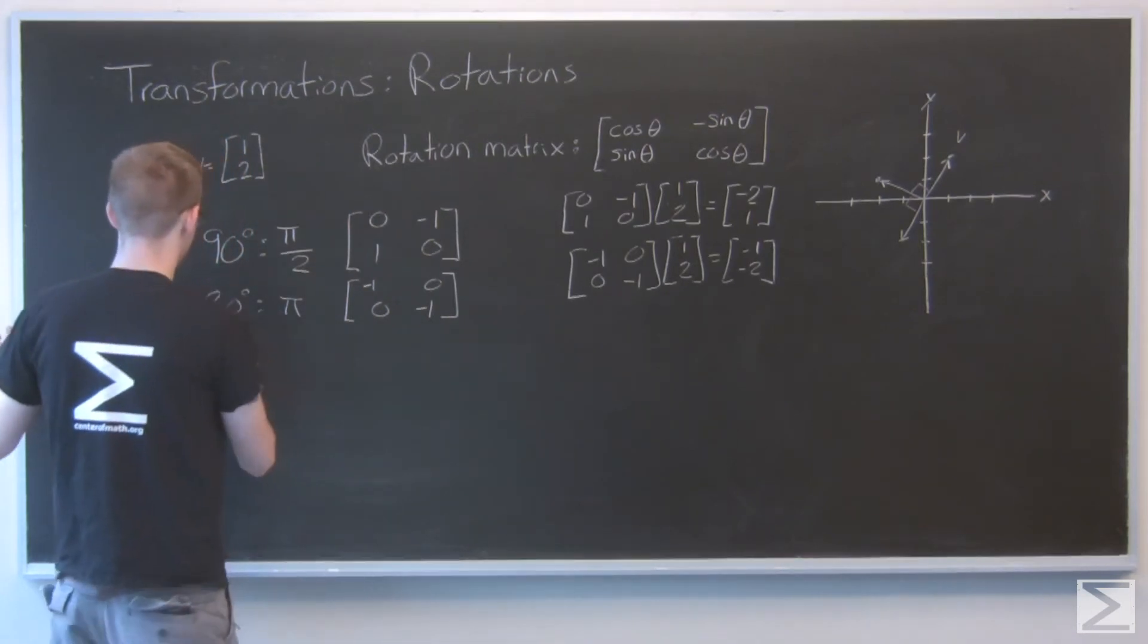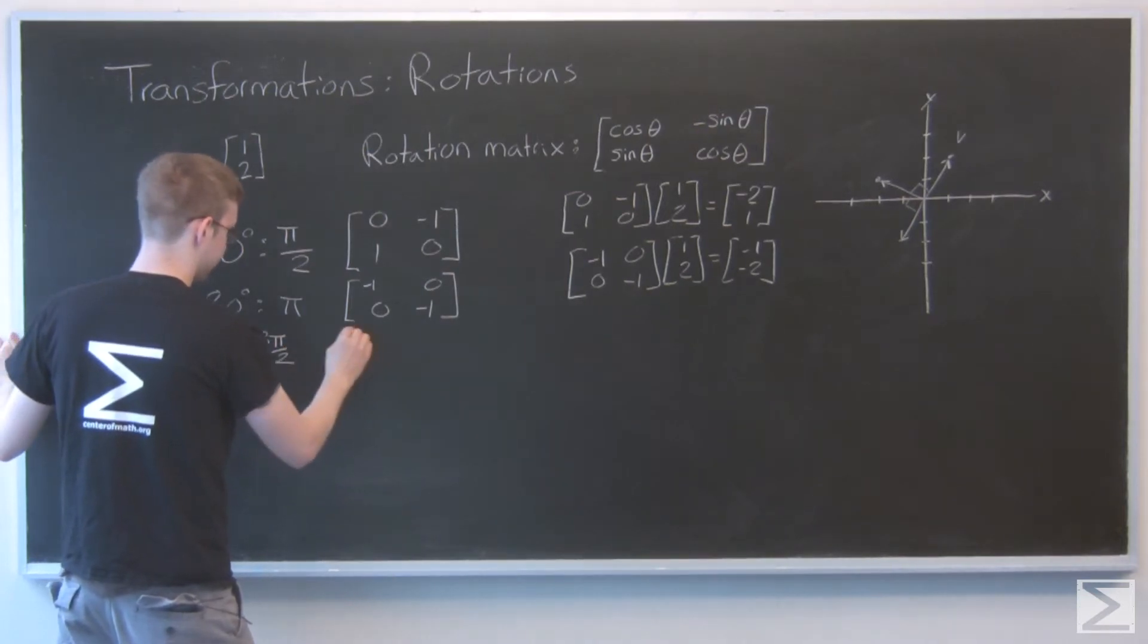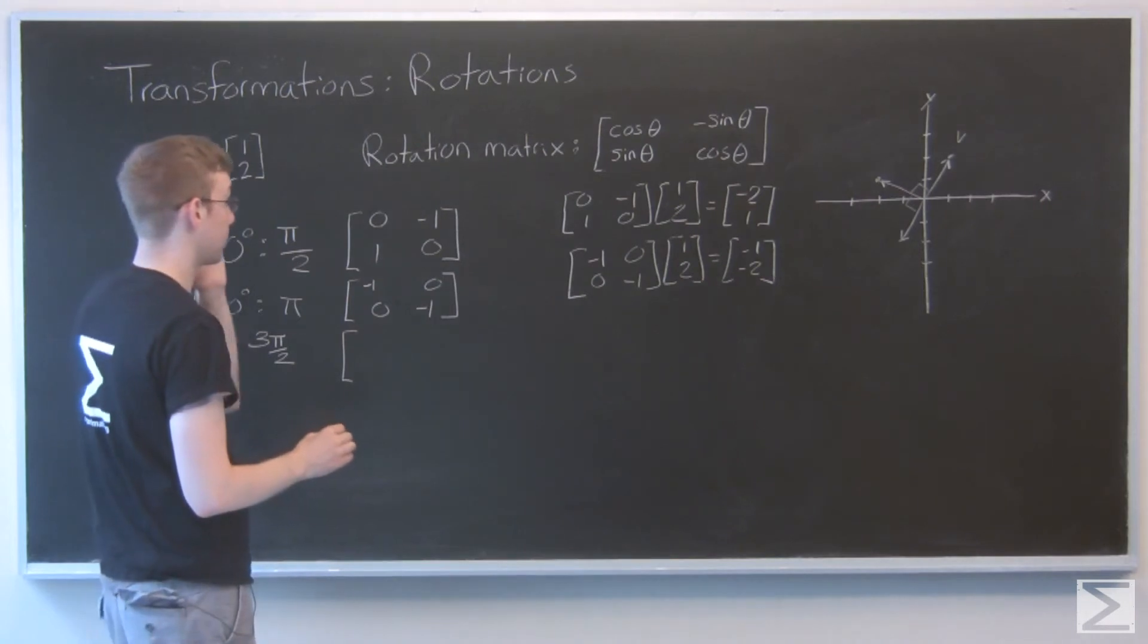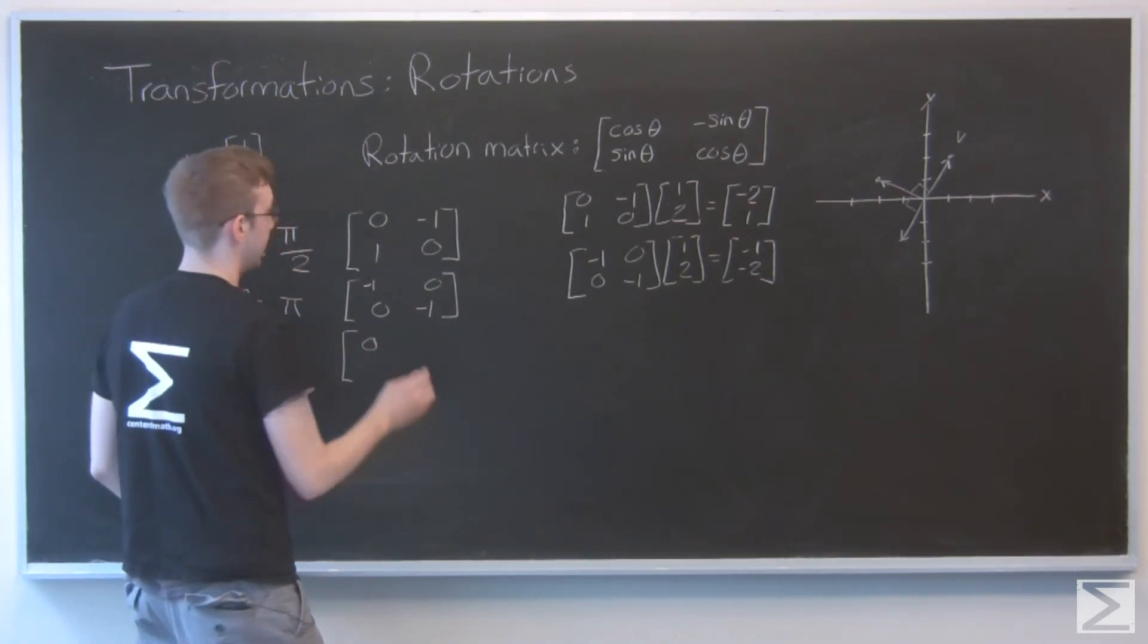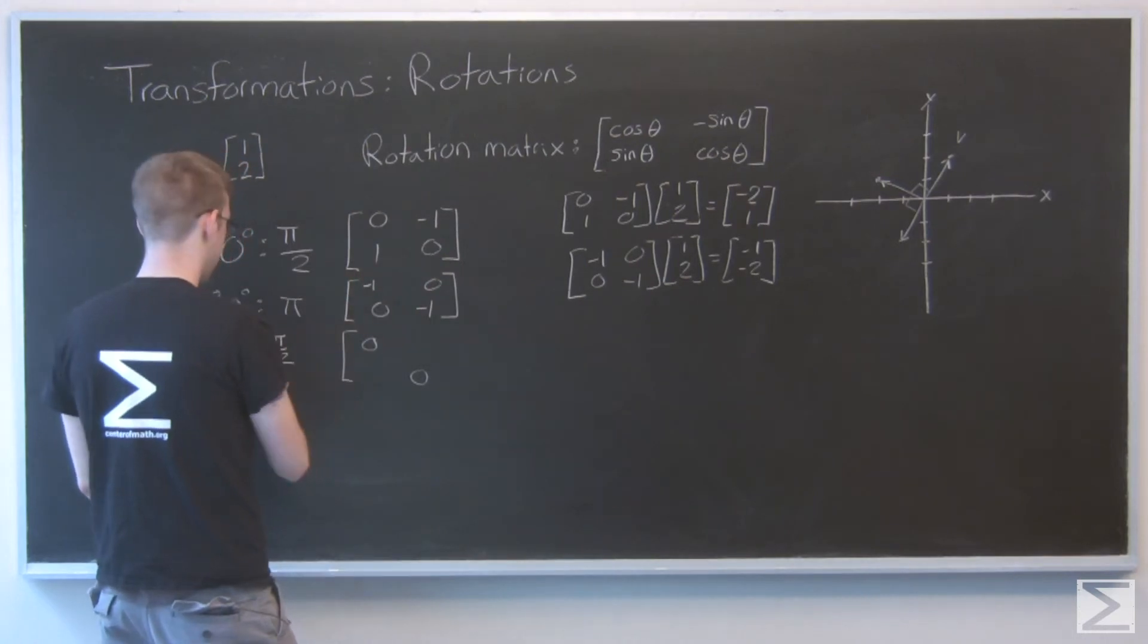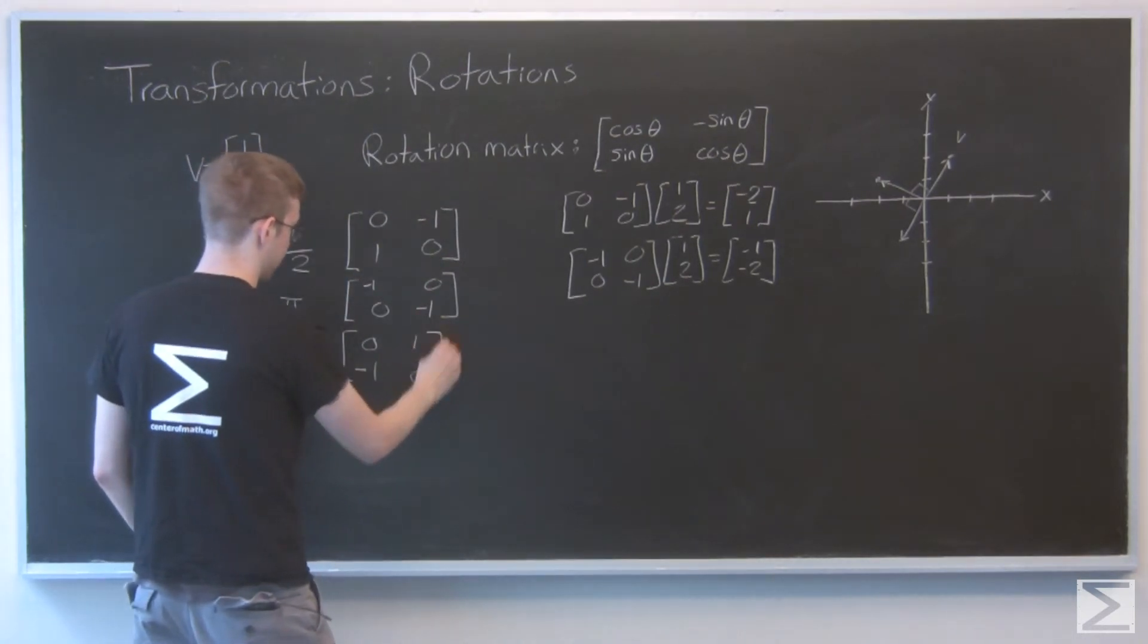Just for kicks, let's try 270 degrees or 3 pi over 2. So for cosine, that's 0 both times. And sine of 3 pi over 2 is minus 1. And that's going to be positive 1.